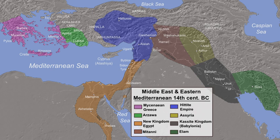Transjordan, the East Bank, or the Transjordanian Highlands — Arabic: Shirk Alardin — is the part of the southern Levant east of the Jordan River, mostly contained in present-day Jordan.